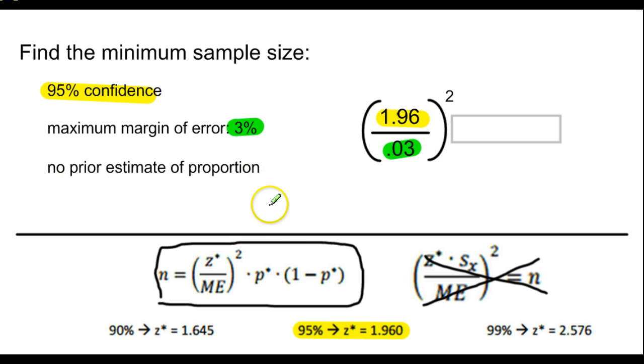The last part says we have no prior estimate of the proportion. And this formula has these weird things that are p-star. That is not p-hat. That is not p, the population proportion. That is not a p-value. Yes, there's another symbol with p. But p-star is the best guess of the proportion going into this calculation. And it says we have no prior estimate.